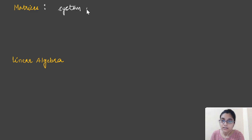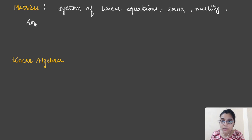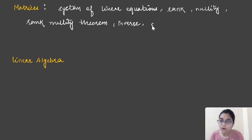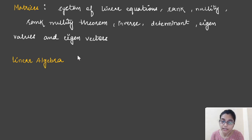In the matrices section, they have mentioned system of linear equations. I have already covered system of linear equations with you, so those who haven't seen it can check the earlier playlist — I think three to four sessions are there. Then they have mentioned rank nullity theorem, inverse, determinant, and after that eigen values and eigen vectors.